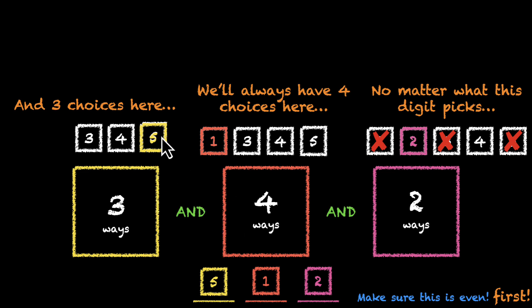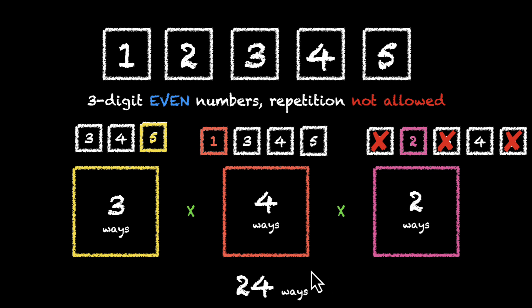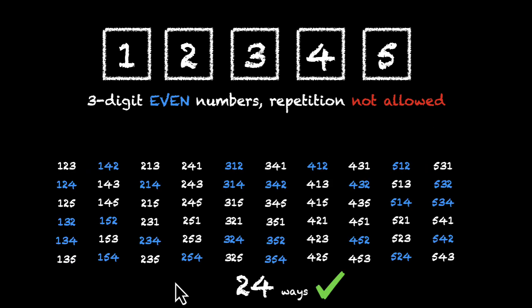This time we can't go wrong. Let's find the total: 3 × 4 × 2 = 24. 3 times 4 is 12, times 2 is 24 — which means we actually have 24 such even numbers where the digits are not repeating. Pause the video and check for yourself; you'll see 24 blue numbers on the screen.